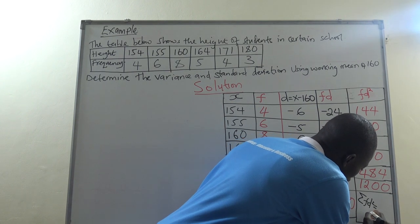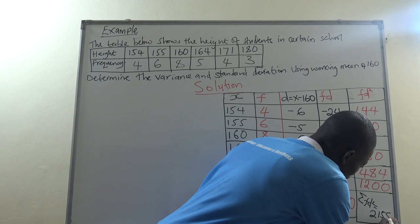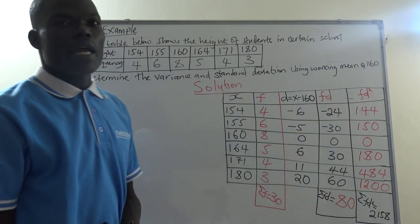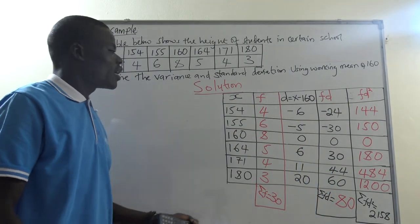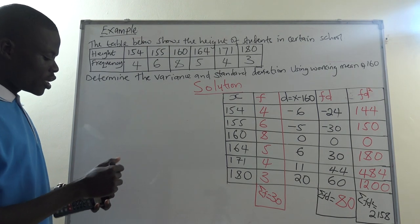It's about 2,158. Then after finishing that one, now you are good to go. You can come and calculate the values which they have asked you to get.